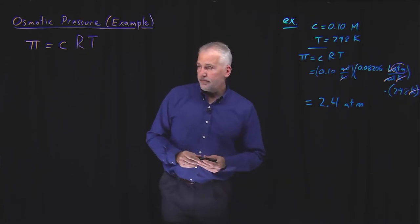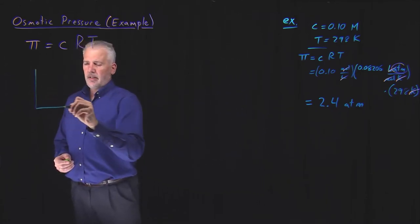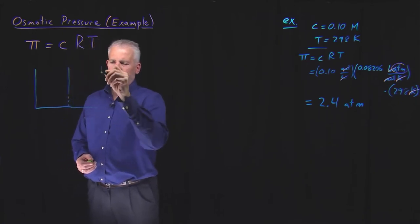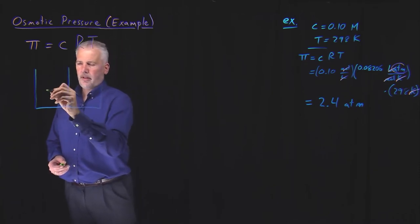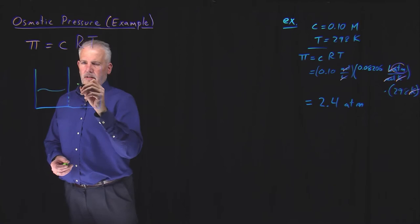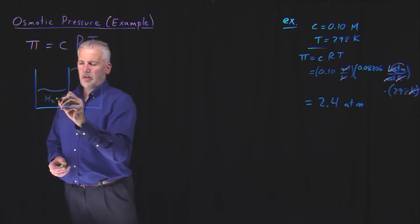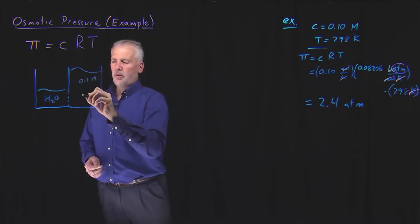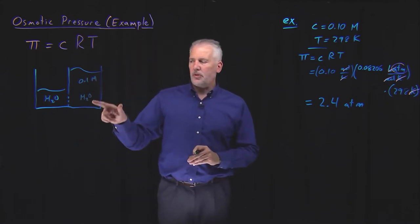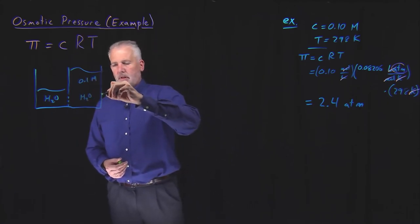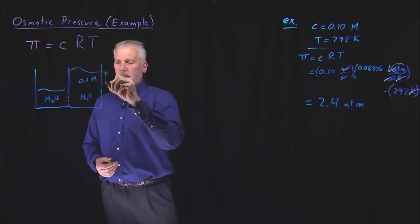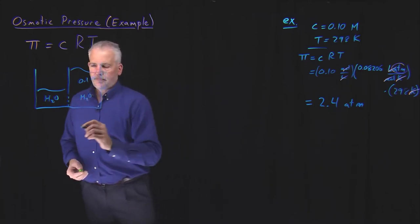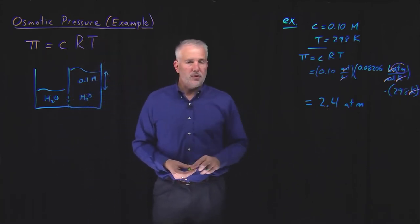What does that mean physically? What it means is that if I have two beakers, one with a pure water solvent, and one with 0.1 molar solution, 0.1 molar in some solute, and water as the solvent, that means that the height of this column will be enough that it's generating a full 2.4 atmospheres worth of pressure.